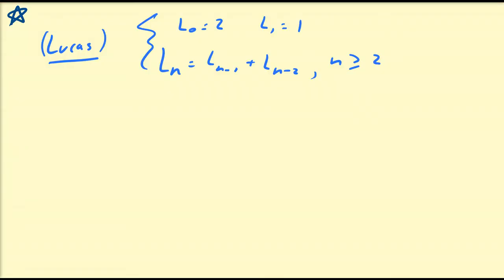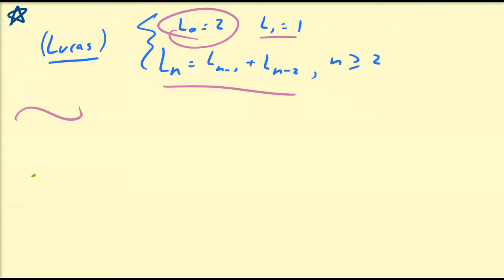Let's talk about the similarities these numbers have with respect to the Fibonacci numbers. The only real difference between this and the Fibonacci number definition is that we start with 2, not 0. The first Lucas number is equal to the first Fibonacci number and the recursive sequence is the same. If we construct the Lucas numbers, we have 2, 1, and then from here on we add the preceding two: so we get 3, 4, 7, 11, 18, 29, and so on. These are the first few Lucas numbers.